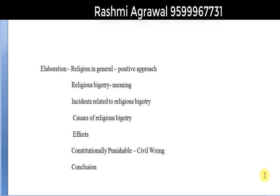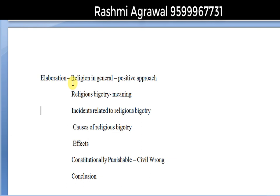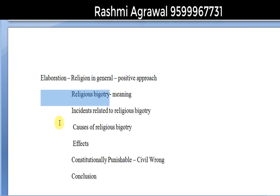I have prepared the roadmap — actually a draft, which I call the roadmap. First, I have to talk about religious bigotry, so I have fragmented it into two components: first religion, then religious bigotry. In my essay, I will first give an introduction on religion, then proceed to religious bigotry — its meaning, then incidents related to religious bigotry, causes of religious bigotry, and then its effects. Then I will come to the two remaining components: constitutionally punishable and civil wrong. And then I will draw the conclusion and end the essay.